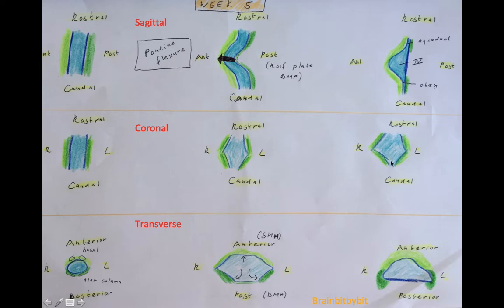This eventually leads to one layer of ependymal cells and a thin layer of vascularized tissue called tela choroidea. In the coronal plane, the fourth ventricle resembles a diamond — so it's diamond or rhomboid shaped, hence the name rhombencephalon. On the cranial and caudal sides, the fluid cavity narrows to form the aqueduct on the cranial side and the obex going into the central canal of the spinal cord on the caudal side.